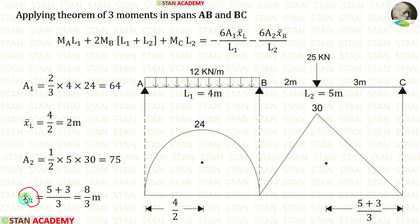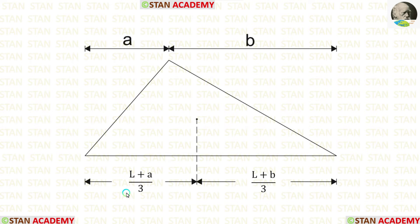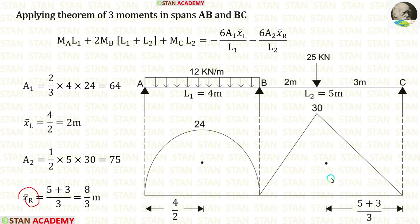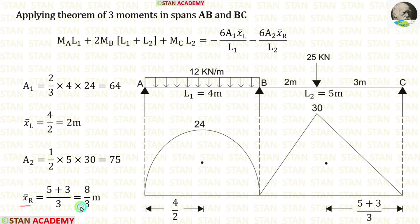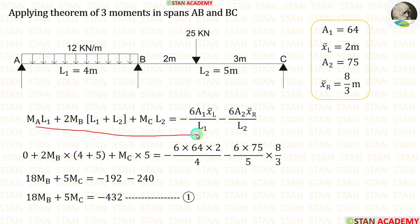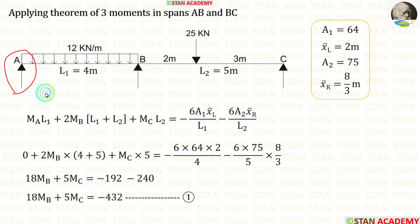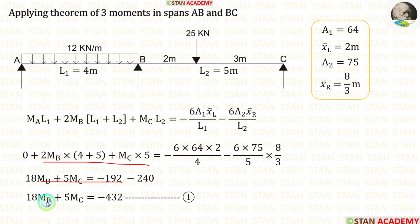Now let us calculate x̄ right. For this type of triangle, the centroid distance towards the left is (L + A)/3 and towards the right is (L + B)/3. We are calculating the centroid towards the right, so the formula is (L + B)/3. Here L is 5 and B is 3, giving x̄ right = 8/3 m. Applying all values in the equation — L1 = 4, L2 = 5, area 1, x̄ left, area 2, x̄ right — and noting MA = 0 at the simply supported end, we make the first equation.